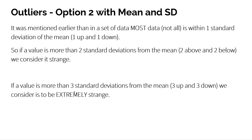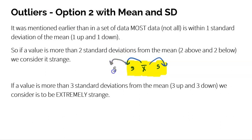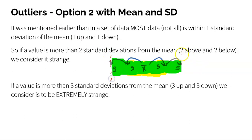Think of it like casting a net: here's the mean, you go up one standard deviation and down one standard deviation — inside that net is over 50% of your data. Now imagine extending that net down a second standard deviation and up a second standard deviation. Now you should have pretty much all of your data. If you have a lot within one, you should have almost all within two. So we're creating fences at two standard deviations below and above. Any data outside that is probably going to be an outlier.